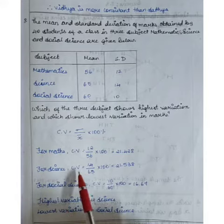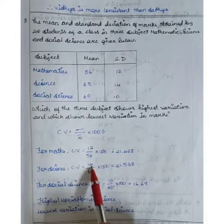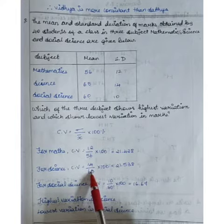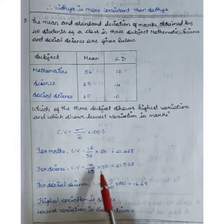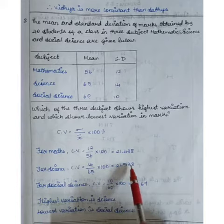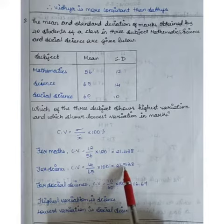Next, for science: the standard deviation is 14 and x-bar is 65. So the coefficient of variation is 14 divided by 65, into 100, which equals 21.53.